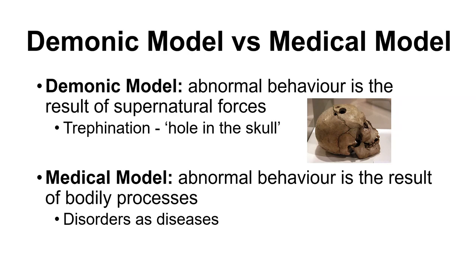Bloodletting persisted into the 1800s as a very common practice, largely because people didn't approach things empirically. In my methods in psychology class, we talk about how having a comparison group is really important. If you just look at bloodletting and say this percentage got better and this percentage died because they were already very sick, you're only framing the positives. But if you looked at people who were just left alone to fight off an infection on their own, that might have been more beneficial — and in fact, that is what should have happened. Without comparison, we have our own biases in the information we see.